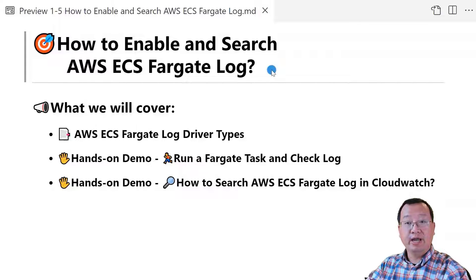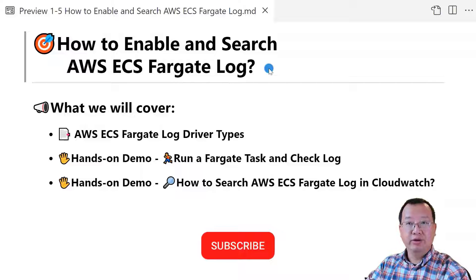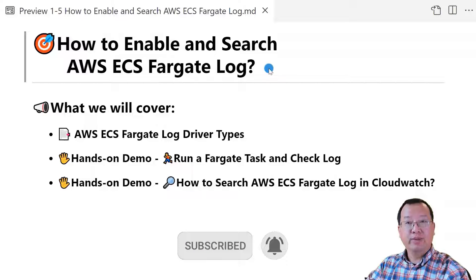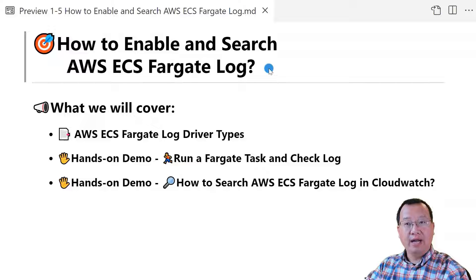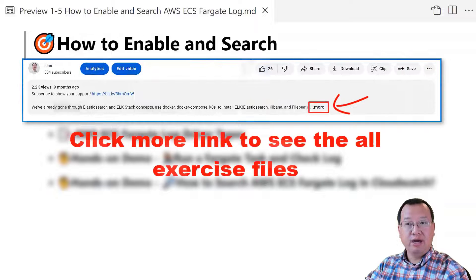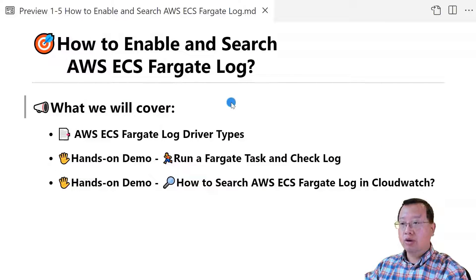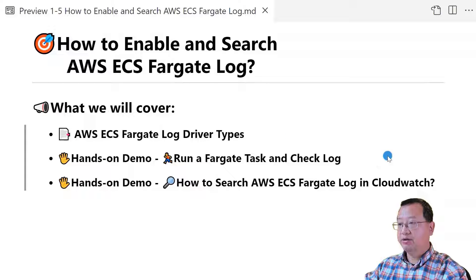Today I'll demo enabling Fargate container logs. Use Postman to call the container's API to generate the log, and then search the log in AWS CloudWatch. After finishing the video, you are able to select a container log driver based on requirements, enable the AWS logs driver in the container, and search log items in CloudWatch.